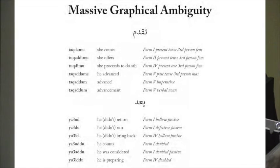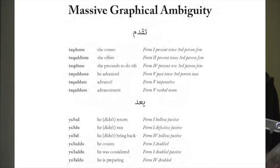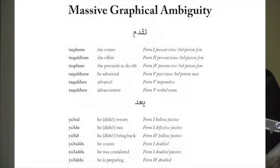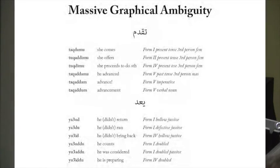A good example is the root Q-D-M. If you want to find the form-one verb hadima or the form-two verb hadama, you're going to get a million form-five verbs, because taqdimu, taqdamu, and tuqaddimu look exactly like taqaddamu, which is form five — and they don't mean anything like the same thing. Taqdamu means 'she comes' (form one present), tuqaddimu is form two present, tuqdimu is form four present, but taqaddamu is form five past with a different conjugation — third person masculine instead of feminine — and then taqaddamu is an imperative, and taqaddum is a verbal noun. They all look exactly the same. This is a massive problem in Arabic computer search.